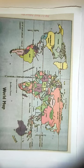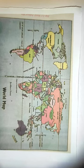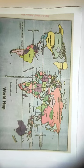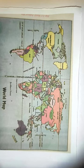Once again — types of maps: the first is political maps, the second is physical maps, the third is thematic maps, and the fourth is historical maps. Are you all understanding? Very good.